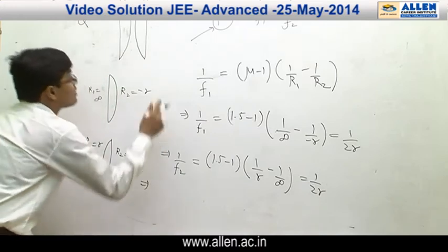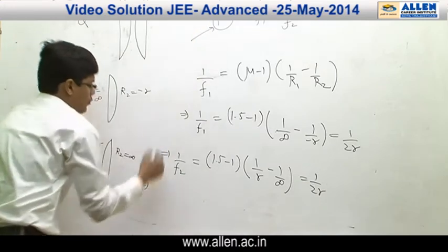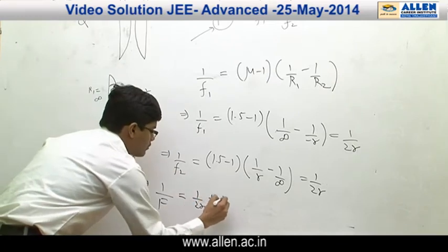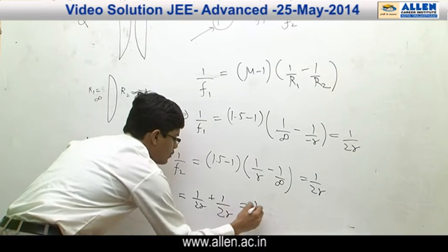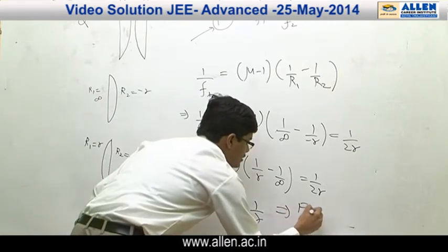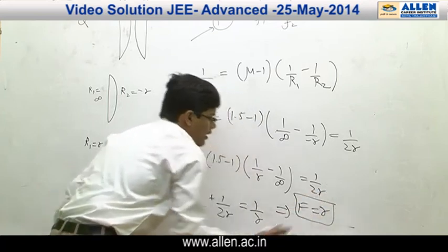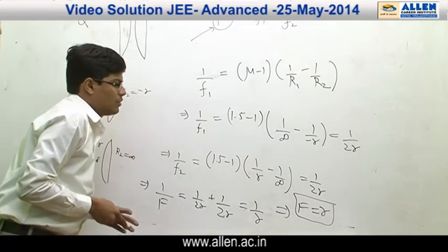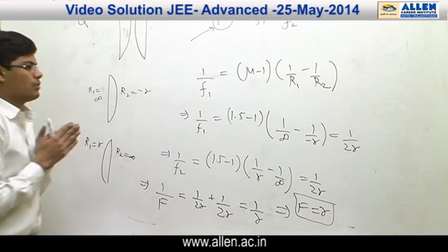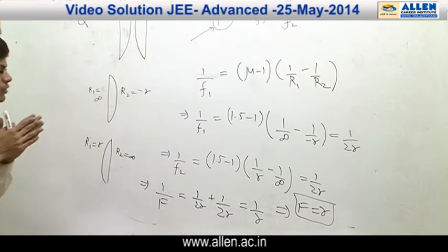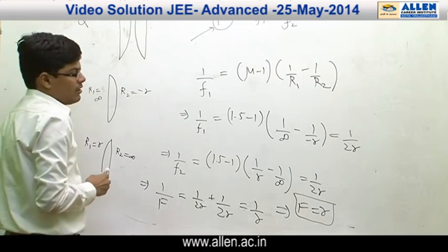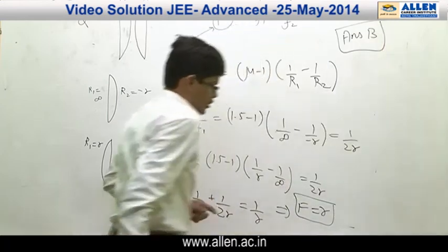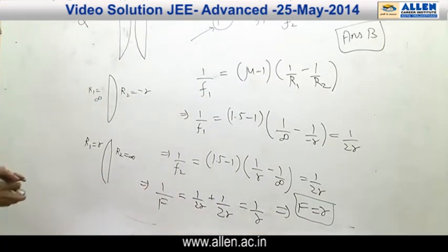Putting these values in the formula: 1/F = 1/(2R) + 1/(2R) = 1/R. That implies F = R. So we have got the effective focal length equal to R for Q, which is the fourth option in the match. So our answer is B.